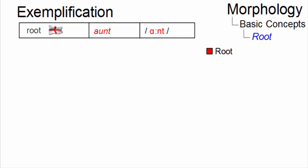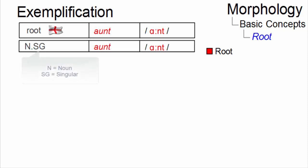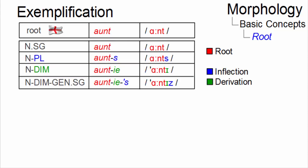In English, a language with little inflection, there is a tendency to have words that are identical to their roots. For example, the singular form of nouns. And inflectional variants, such as the plural form, or derivational variants, like 'ante', again contain the root.